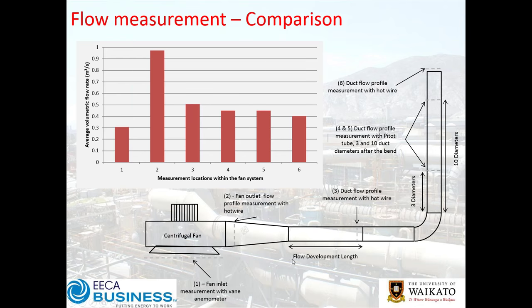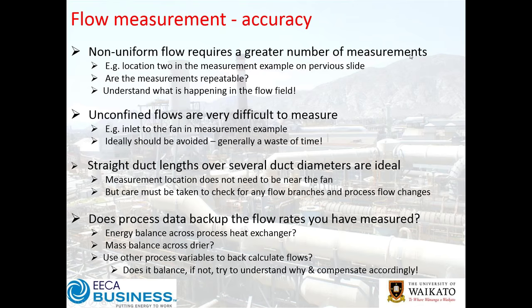The lesson learned is to be very careful where you take your measurement. Sometimes instead of a direct flow measurement, there might be another way — say through heat transfer, where you have a more reliable measurement of water temperature in and out or steam condensed. For non-uniform flow, many more measurements at multiple locations are required, and you need to check repeatability and understand the flow field. Unconfined flows at a fan inlet or open duct exit are very difficult to measure — mostly a wasted effort.